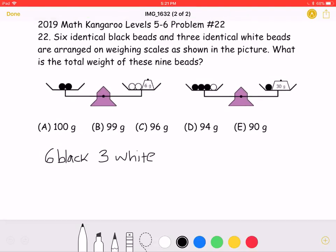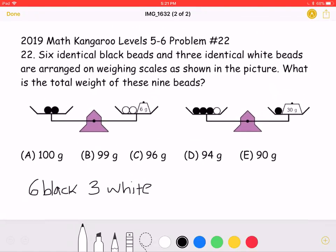Here is where we will be doing the solution. To start, the question asks for the total weight of the nine beads, not necessarily how much a black one weighs or a white one weighs, so we don't need to find that information, just the total weight.